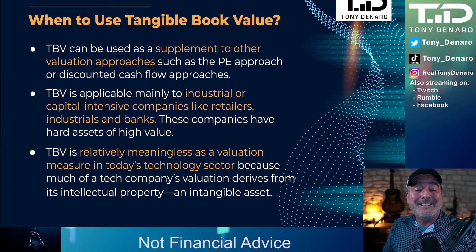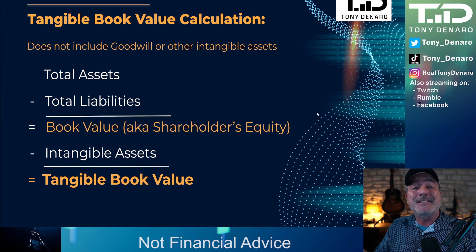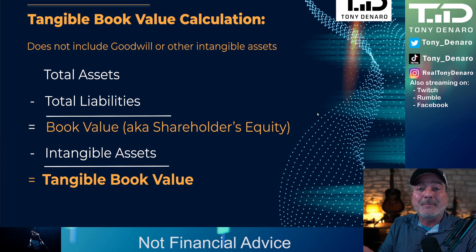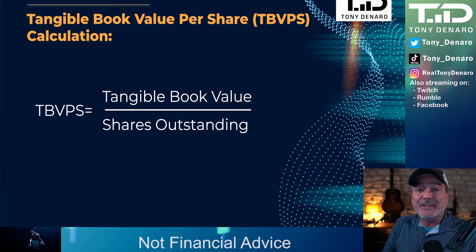Tangible book value is most commonly applied in the industrial sector, banks, and the retail industry — not so much in the tech sector. The formula: total assets minus total liabilities equals shareholders' equity or book value. Then subtract all intangibles from the asset section to get tangible book value. A related metric is tangible book value per share, which is the company's tangible book value divided by the number of shares outstanding.